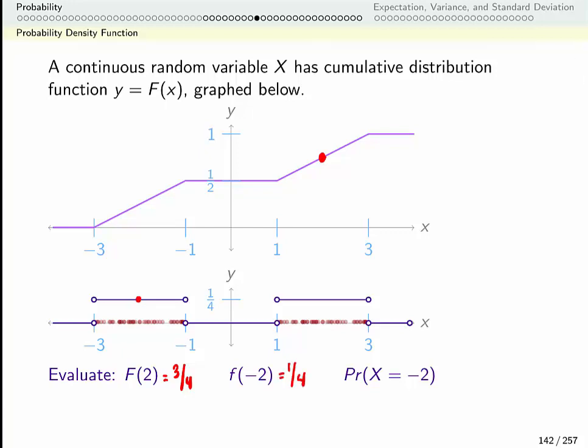That doesn't have such an easy interpretation. It's not true, for instance, that the probability of getting negative two is a quarter. Because this is a continuous random variable, the probability of getting any one number is zero. Probability density functions are easiest to understand sort of relative to themselves. So it's a quarter here and a quarter here and a quarter here, which means I'm sort of equally likely to be in any of these spaces. But it's zero here, which means I'm not likely at all to be in that space.